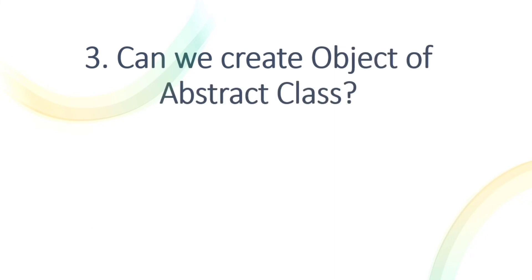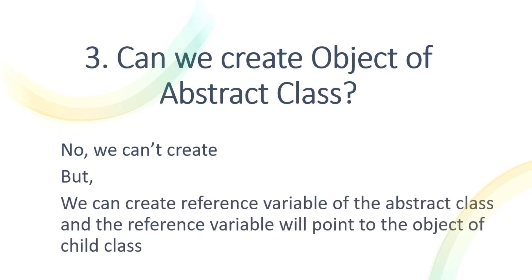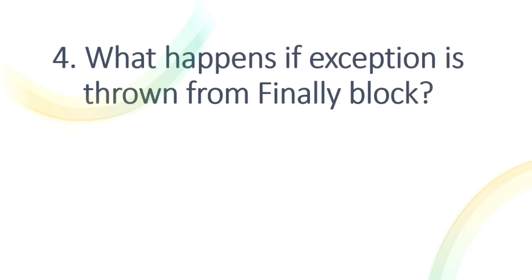The next question is: can we create an object of an abstract class? No, we cannot. However, we can create a reference variable of the abstract class that points to the object of the child class. The abstract class is implemented in the child class, so you create the object of the child class.